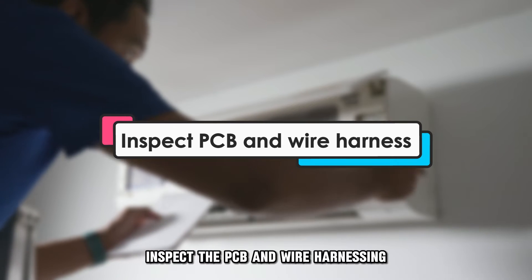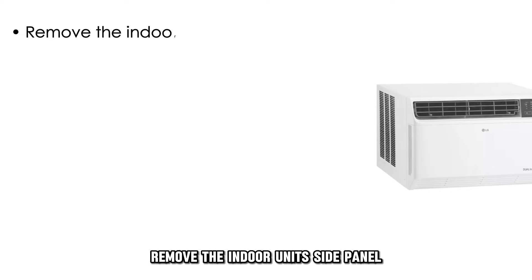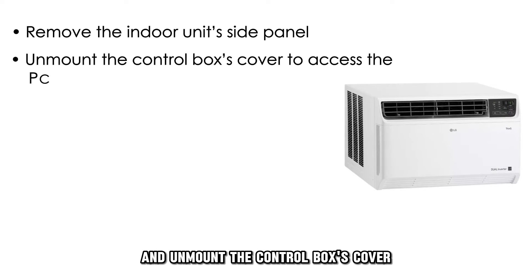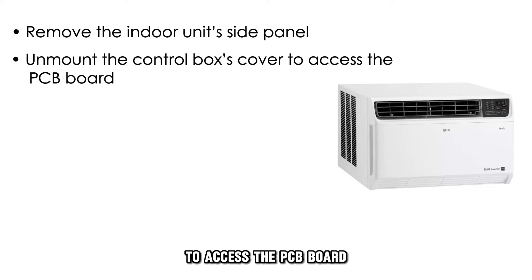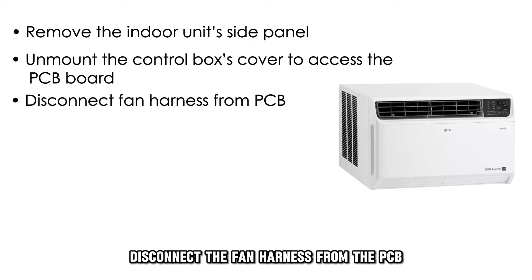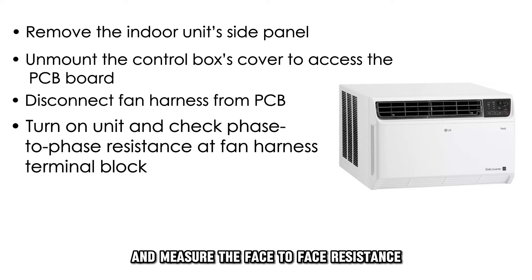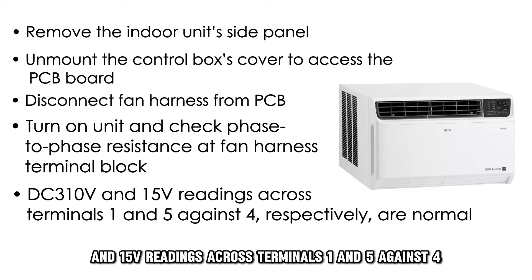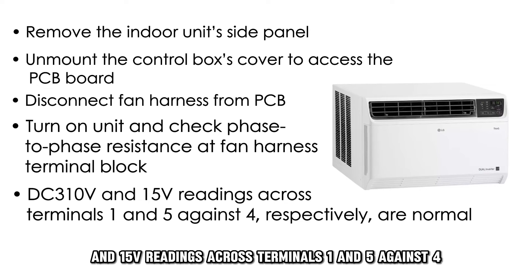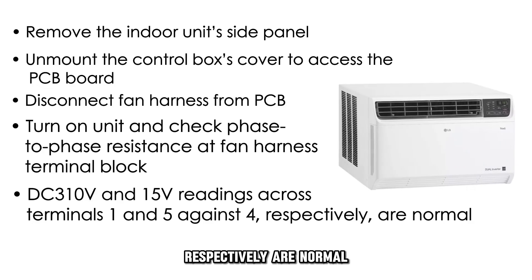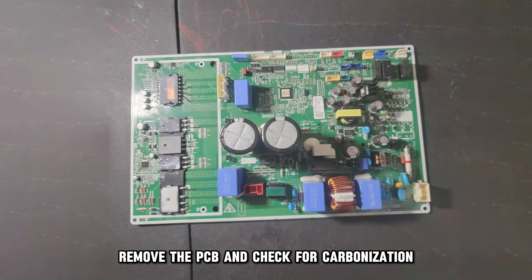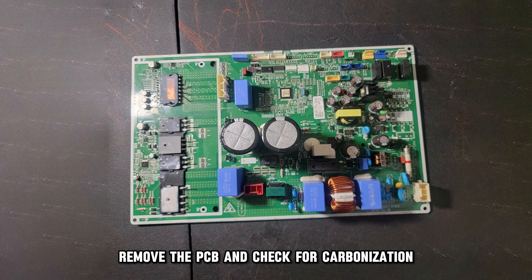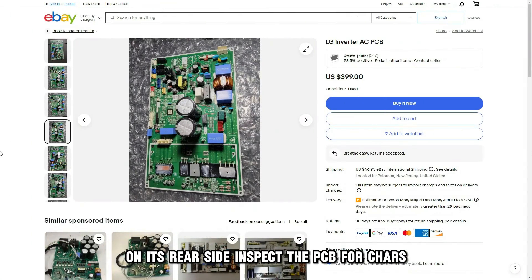Inspect the PCB and wire harnessing. Remove the indoor unit's side panel and unmount the control box's cover to access the PCB board. Disconnect the fan harness from the PCB, turn the unit on, and measure the phase-to-phase resistance across the terminal block where the fan harnesses connect. DC 310V and 15V readings across terminals 1 and 5 against 4 respectively are normal. Remove the PCB and check for carbonization on its rear side. Inspect the PCB for chars and replace the PCB if necessary.